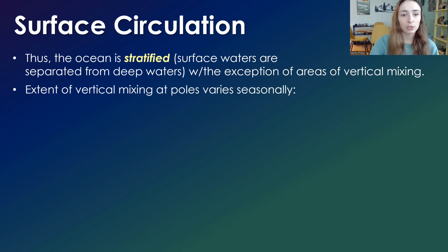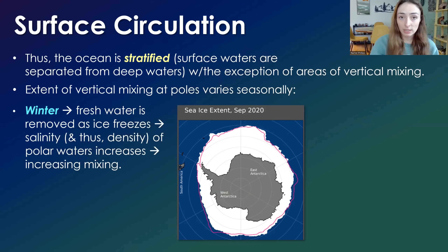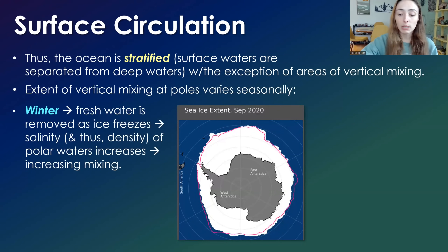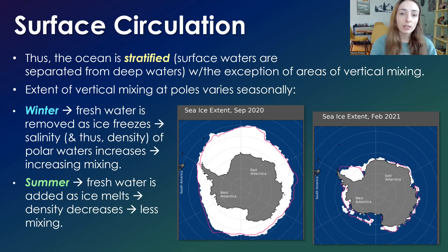The extent of vertical mixing that occurs at the poles varies drastically based on season. In winter, fresh water is removed as ice freezes, so the salinity and thus the density of the water increases, which increases downwelling and mixing. Whereas during the summer, fresh water is added from melting ice, which lowers the salinity and density and therefore decreases the amount of downwelling and vertical mixing.